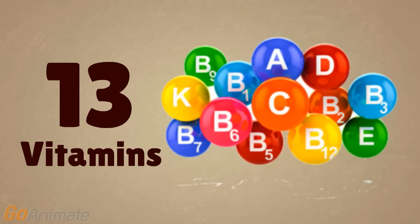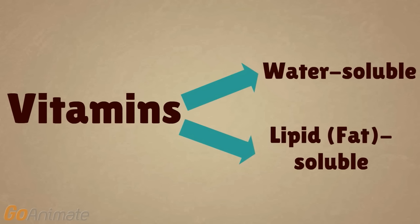In total, there are 13 vitamins needed by the body. Vitamins come in two types that are transported and stored differently in the body. These are water-soluble and lipid-soluble vitamins.